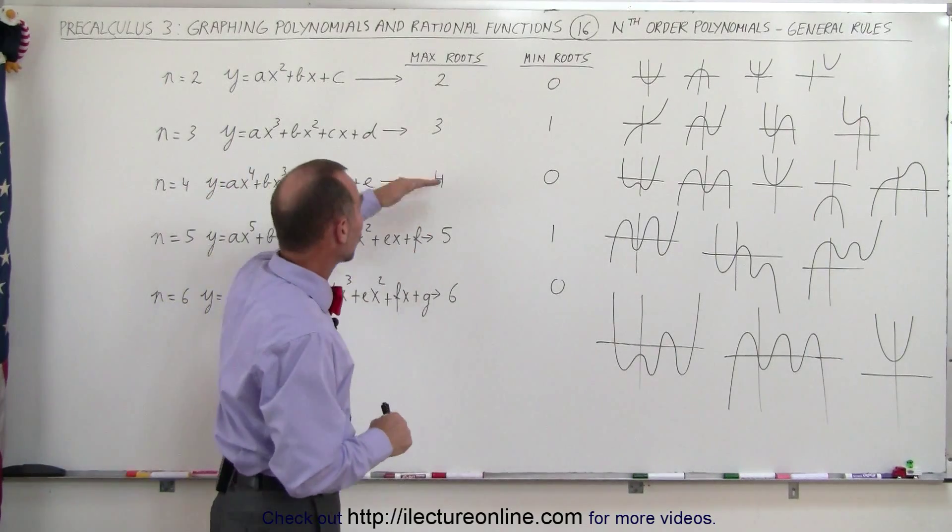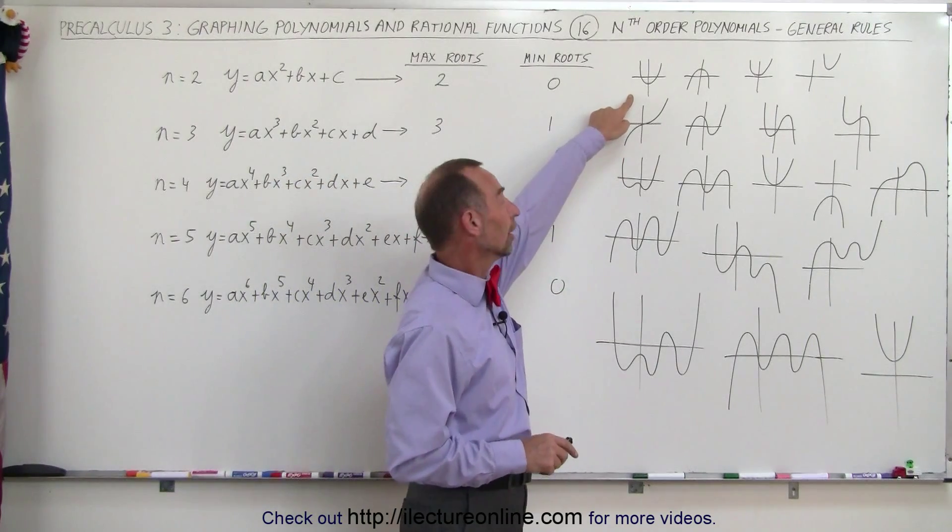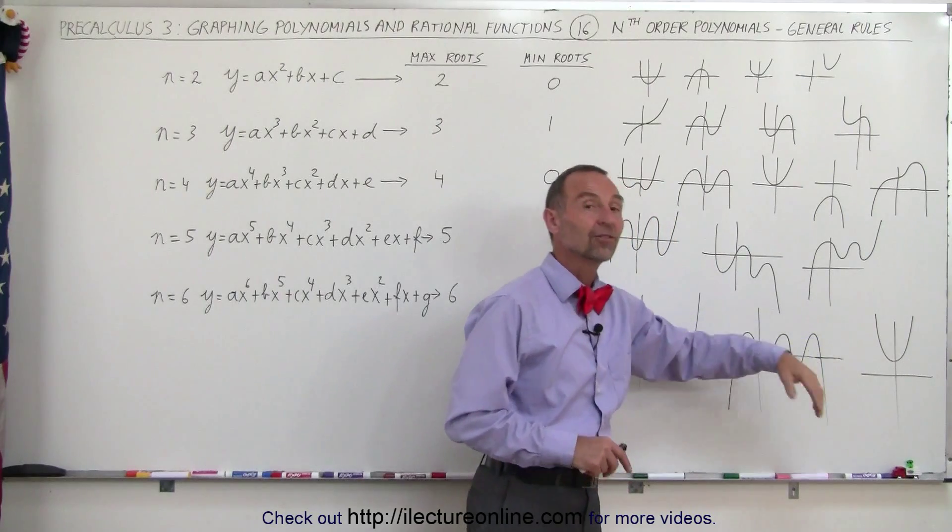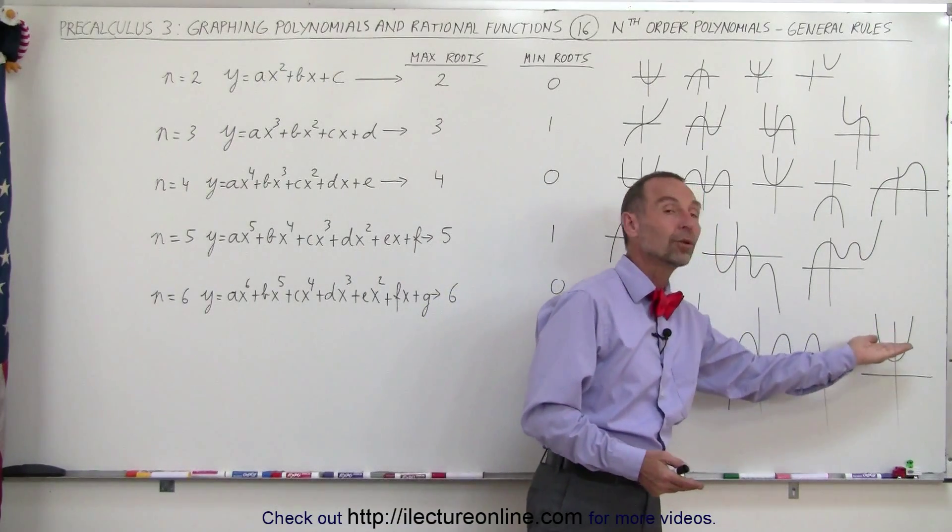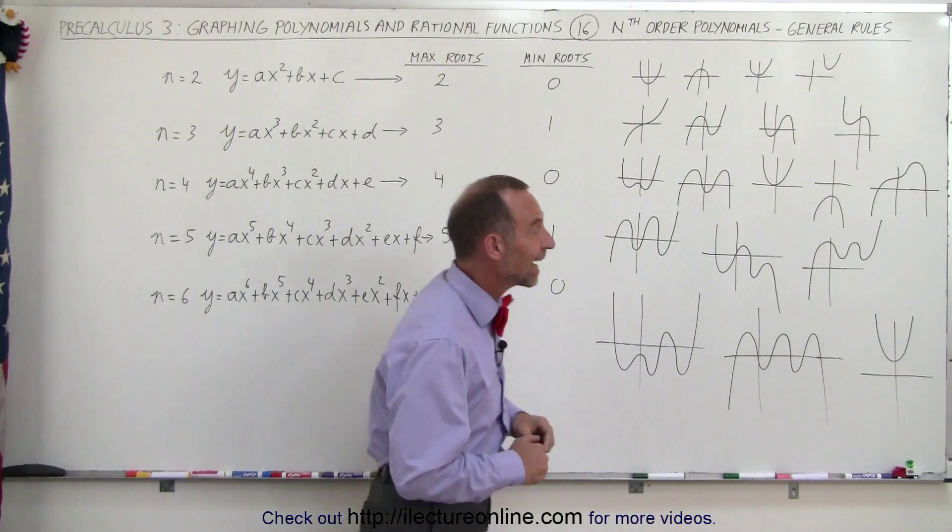Because second, fourth, sixth, and so forth even-order polynomials all can have the shape of a parabola. Notice, here's a fourth order, here's a sixth order, and sometimes you don't need to have any roots if the polynomial never crosses the x-axis.